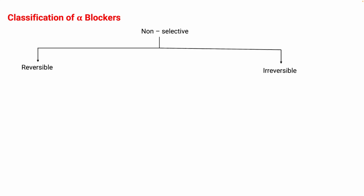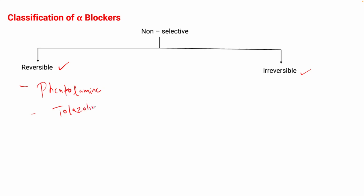First we will start with the classification of alpha blockers. During the antagonist discussion, alpha and beta blockers will be covered. Alpha blockers are classified into a variety of types. First is non-selective alpha blockers, which are again divided into two: reversible and irreversible. The non-selective reversible alpha blockers include phentolamine and tolazoline — these are two examples of reversible alpha blockers.